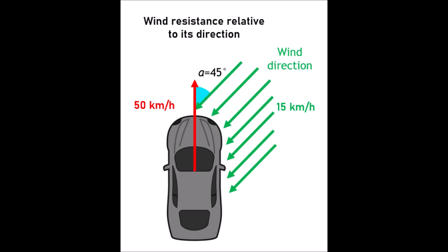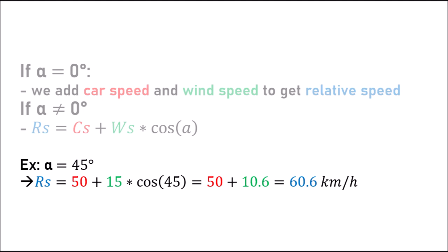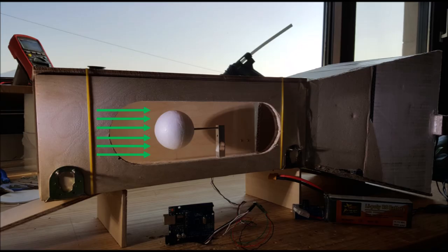With alpha equals to 45 degrees, for example, and real wind speed equals to 15 km/h, then the speed we're going to take into account is 10.6 km/h. Anyways, for our tests, the wind was always front-facing, so alpha equals to 0 degrees.